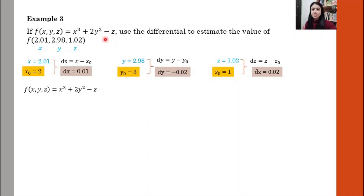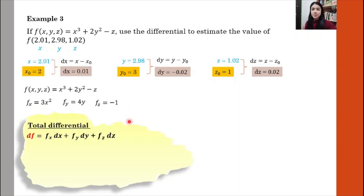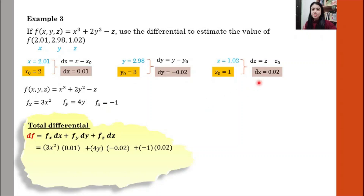Now we look at the function and find the first-order partial derivatives fx, fy, and fz. Then we apply the formula of total differential: df equals fx dx plus fy dy plus fz dz. We substitute fx, dx, fy, dy, fz, and dz into the formula, then substitute x₀ equals 2, y₀ equals 3, and z₀ equals 1 to evaluate the expression.